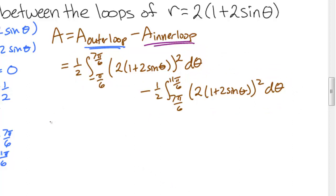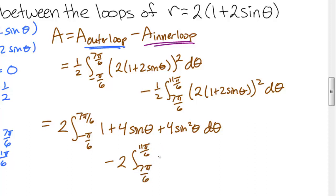We could take it a little further by squaring things out, and we would have 2 from the 2 squared and the 1/2, the integral from negative π over 6 to 7π over 6 of 1 plus 4 sine θ plus 4 sine squared θ, dθ, minus 2 times the integral from 7π over 6 to 11π over 6 of the same thing, 1 plus 4 sine θ plus 4 sine squared θ, dθ.